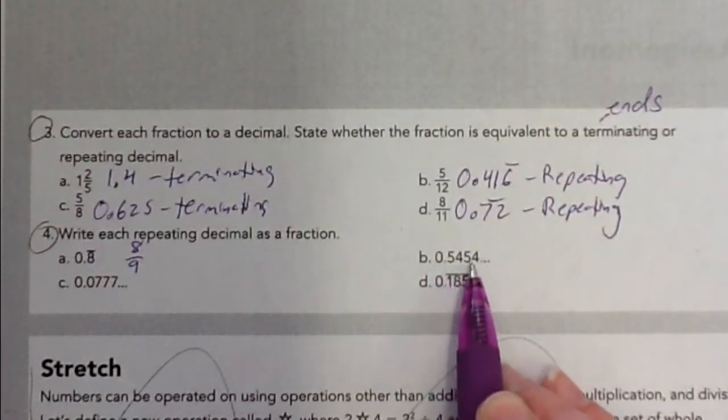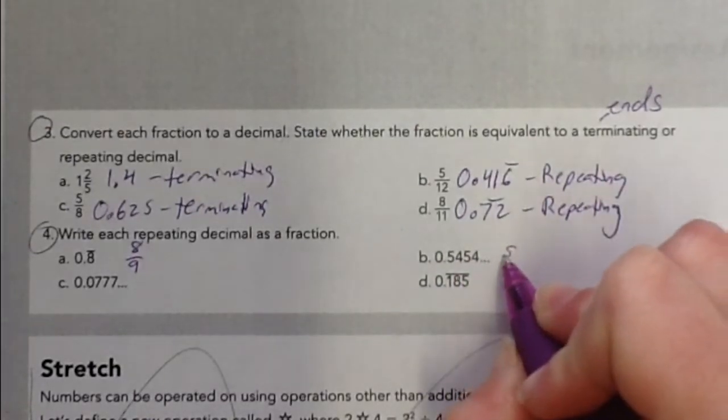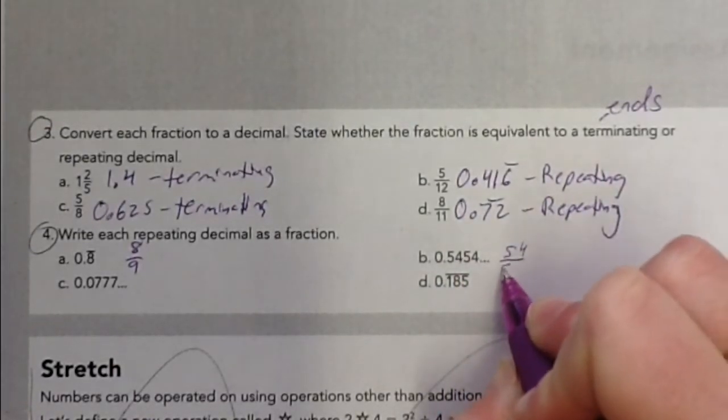B, 0.54 repeating. Because there's two digits repeating, that 54, I'm going to put it over two nines.